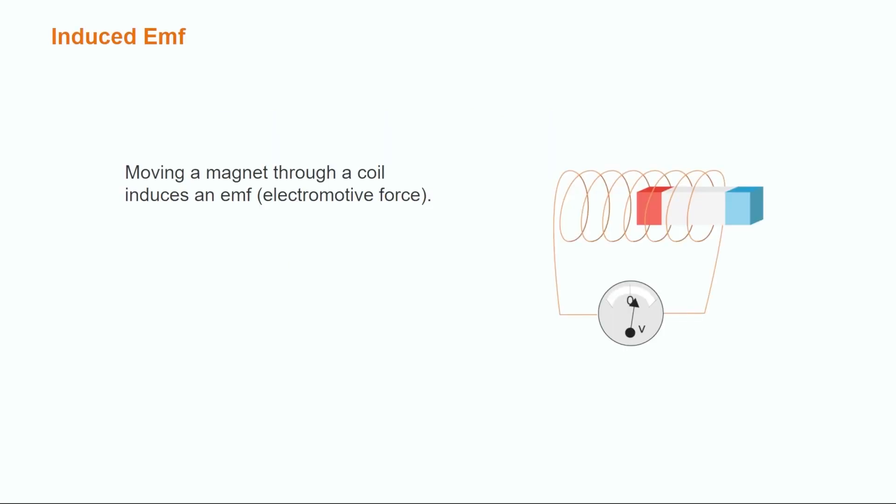In 1831, Michael Faraday and Joseph Henry independently discovered that moving a magnet through a coil of wire induces an electric current. The voltage produced by this induced current is called an EMF or electromotive force.